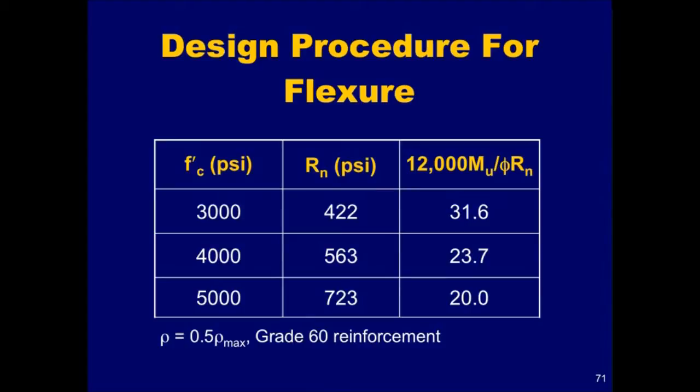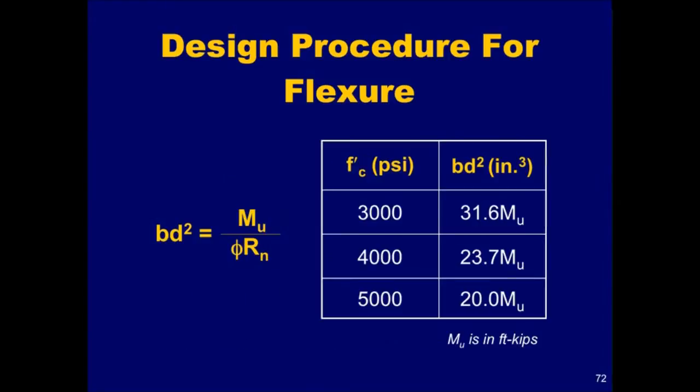The quantity in the far right column of this table is the right hand side of the equation that determines the required beam dimensions. Thus, for the given concrete strength, the required Bd squared can be determined by multiplying the maximum factored bending moment by the appropriate factor shown in the table, where m sub u has the units of foot kips. Other constants can easily be determined for other material strengths.